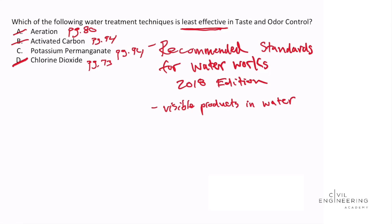Given my research through the Recommended Standards for Waterworks document, what stands out is that potassium permanganate leaves visible products in the water, which is not desirable for drinking water delivered to residents' homes and businesses. People don't want to see visible reaction products in water they drink, wash dishes with, or shower in. Using engineering judgment, answer choice C — potassium permanganate — is the least effective water treatment technique for controlling taste and odor.